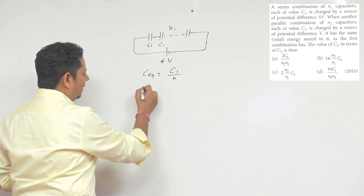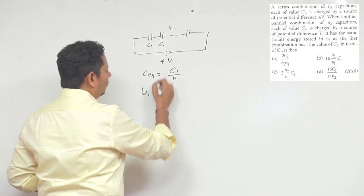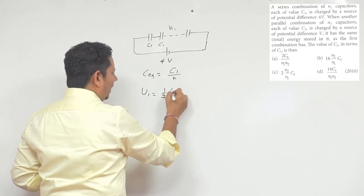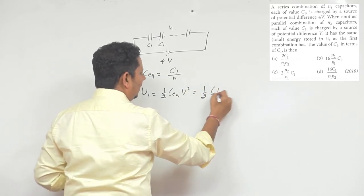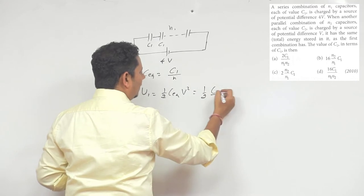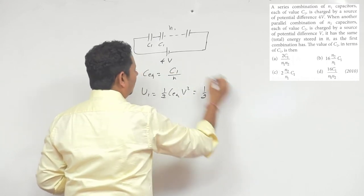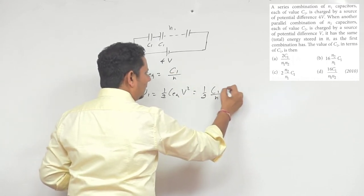We can see that energy U1 will be equal to half C times V squared. So this is half times C1 divided by N1 multiplied by 4V squared. All right?